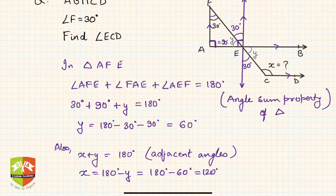If they're parallel, this angle is also 90 degrees. So this whole angle is 90, and this is 30, so hence it should be 60 degrees. This is another way of solving the same problem.